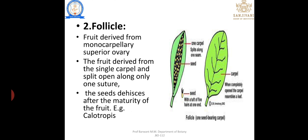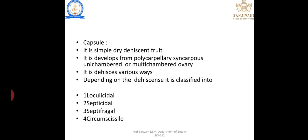Follicle: the fruit derived from a monocarpellary superior ovary, breaking open along only one suture. It is a sac-like structure in which seeds are stored, for example Calotropis. Capsule: a dry dehiscent fruit developed from a polycarpillary syncarpous uni-chambered or multi-chambered ovary, dehiscing in various ways.